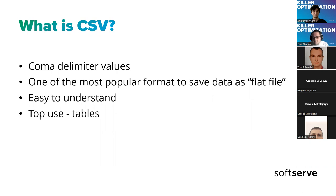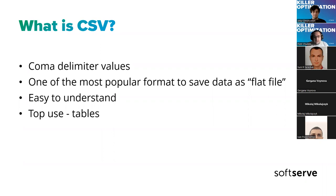CSV is easy to understand because every piece of information is on a line called a row. Everybody is separated by a special mark, and we decide what that mark is. It's easy to transform data from relational databases like MySQL or Oracle to a flat file using this format.